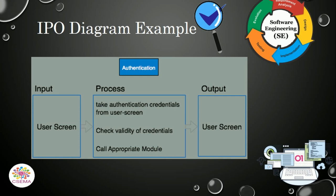In the Processing module, it takes the authentication credentials from the user — that is the username and password — and checks for validation. It then calls the appropriate module based on the input provided by the user. Finally, the output is provided by the software system back to the user.